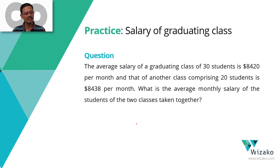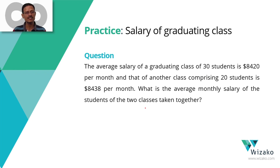The average salary of a graduating class of 30 students is $8420, and that of another class comprising 20 students is $8438 per month. What we need to find out is the average monthly salary of students of the two classes taken together.